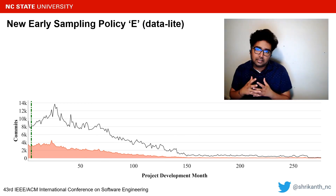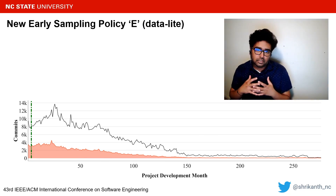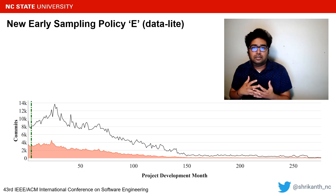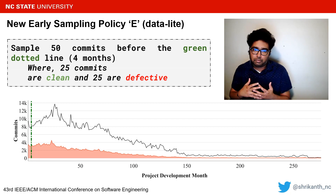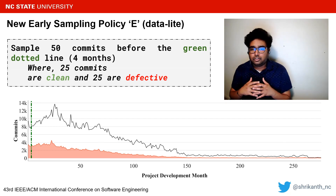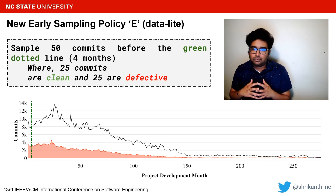Using that result, we introduce a new sampling technique called E that samples 50 commits from the first four months of the project lifecycle. To avoid class imbalance problems, equal numbers of clean and defective commits are chosen.